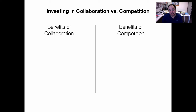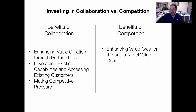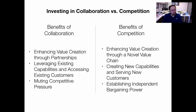The benefits of collaboration include getting partnerships that reinforce value creation along an existing value chain, leveraging existing capabilities, accessing existing customers rather than having to build them from scratch, and muting competitive pressure — though monopoly is better than competition if you can have it. The benefits of competing include pursuing a novel value chain with potentially better trajectory, developing new capabilities, serving new customers being underserved by existing value chains, and establishing independent bargaining power so you're not beholden to firms that might have power over you.